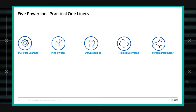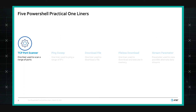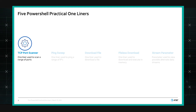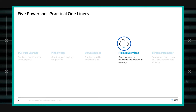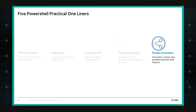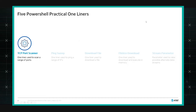The five commands we're going to cover are: a TCP port scanner built into PowerShell, a ping sweep, the ability to download a file, a fileless download, and using the stream parameter on a get-item command that lets us look at an alternate data stream within a file.